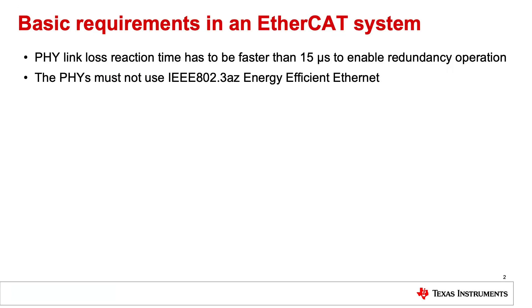In general, an EtherCAT system has some basic requirements which the used PHY needs to correspond to. One of those requirements is a link lost reaction time which needs to be shorter than 15 microseconds. The DP83826E can do this faster than 10 microseconds.